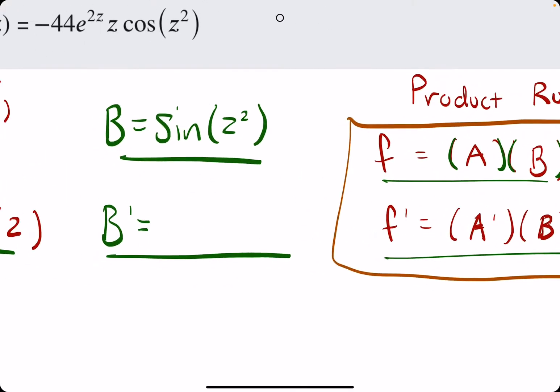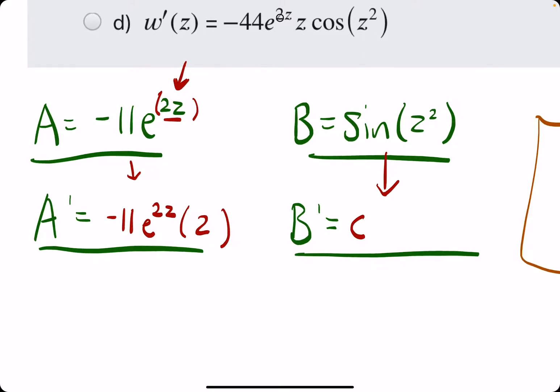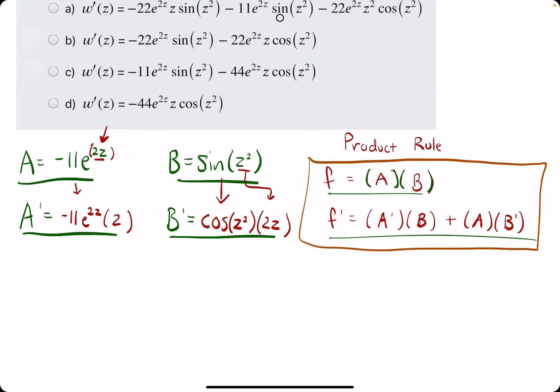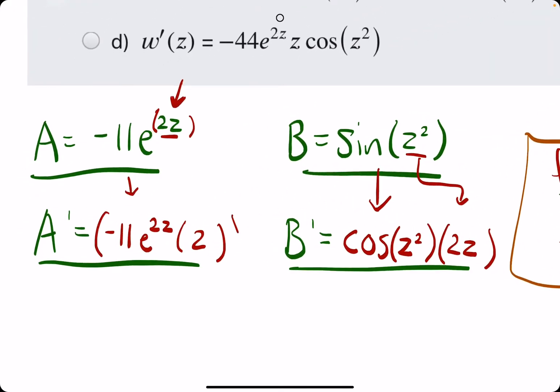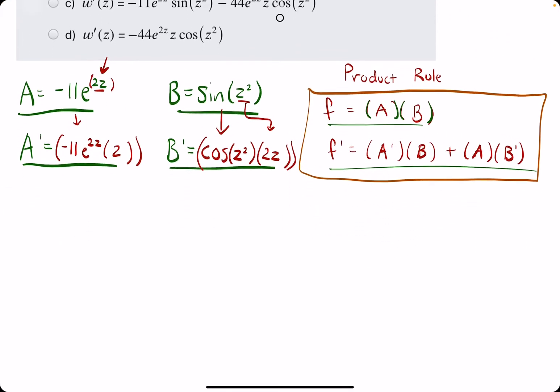Then, the derivative of sine of anything is cosine of that same anything. So, cosine of Z squared, in this case. But then, chain rule says we need to multiply by the derivative of the inside, 2Z. And this is all we need, now that we have these, we will arrange them in this format, and we will have our answer.